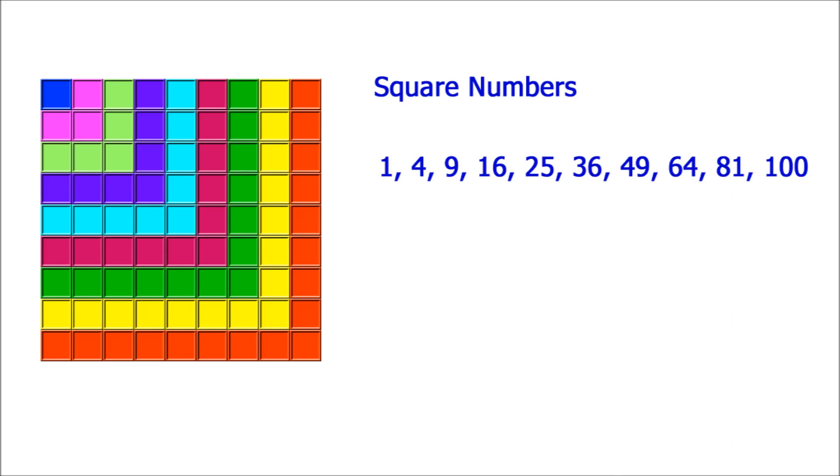And we can see that if we want the next one, we'd have to add on another 19. And that would give us 100. Or another way of thinking of that is that 10 times 10 is 100. So 100 is the tenth square number.